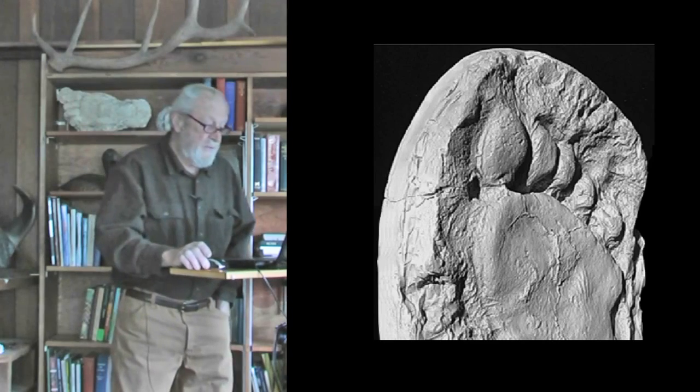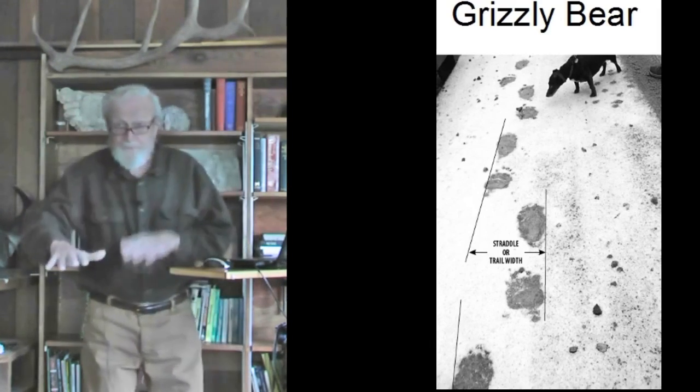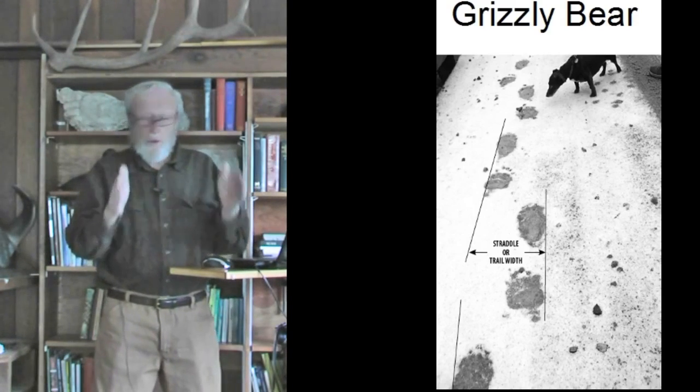Now, anyone interested in tracks and tracking knows that we can't just rely on individual tracks, but that the pattern of the tracks — the trackway, or what the technical term is, trail — shows us a great deal about the animal. For example, here is a trail of grizzly bear tracks on a road. There's both hindfoot and forefoot, and there is this straddle, or width, to the trail.